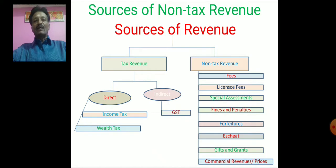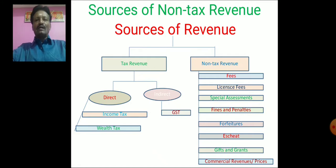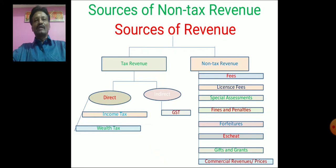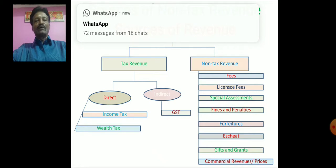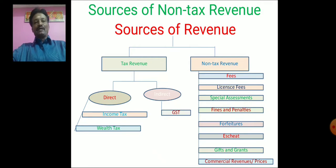In direct taxes, the impact and incidence fall on the same individual. But in indirect taxes, the taxpayer and the tax bearer are not the same individual. For example, with sales tax or GST, the government imposes the tax on the producer or seller, but ultimately the seller transfers the tax burden either fully or partially to the consumer. So the impact is on the producer and the incidence is on the consumer.